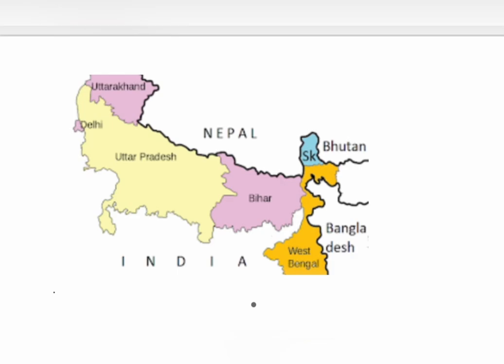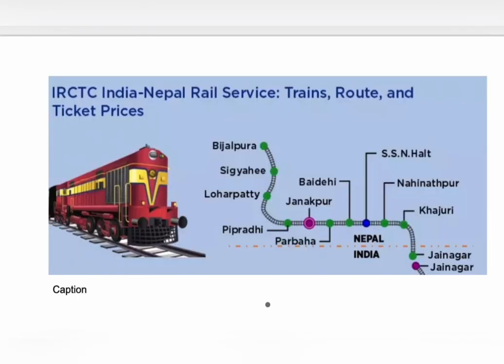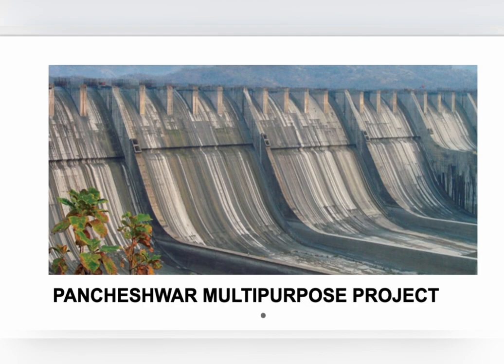Nepal is strategically very important for India because it acts as a natural security and buffer zone between India and China. It also supports India in reducing the spread of terrorism and Maoism. India has made several development projects with Nepal, including cross-border railways. The Pancheshwar Multi-Purpose Project and bridges over the Mahakali River were also constructed. For Nepal, India is the largest trading partner and the highest source of Foreign Direct Investment (FDI).